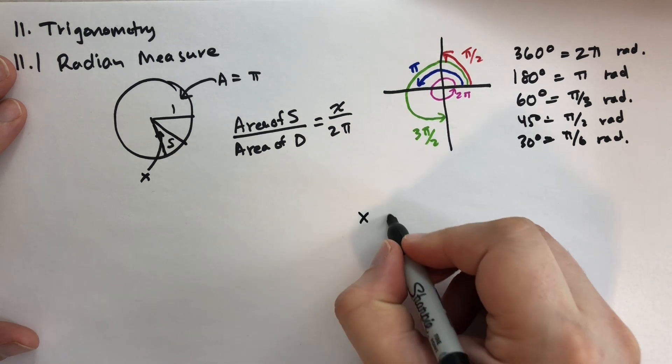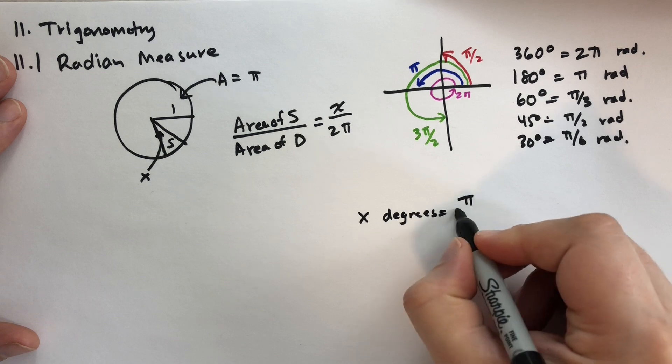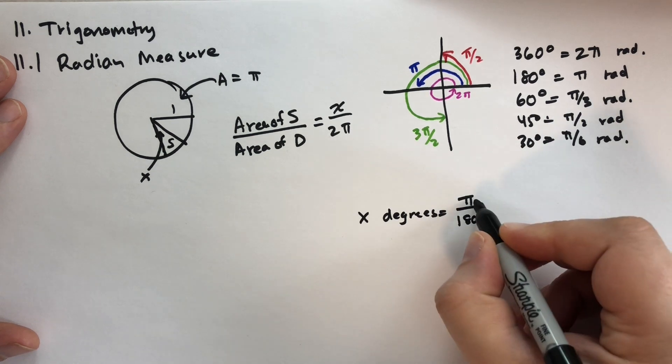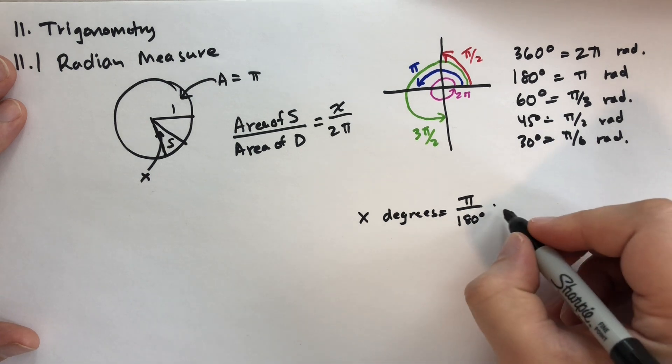And remember, it's just x degrees equals pi over 180. Because pi is half a circle, so divide by 180. And that's going to give you times x radians.